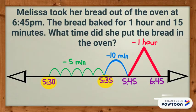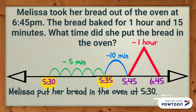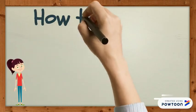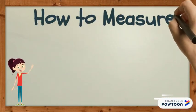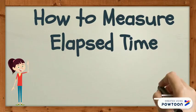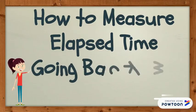Now we've solved the problem and know that Melissa put her bread in the oven at 5:30. In this video, we learned how to measure elapsed time going backwards. Thanks for watching.